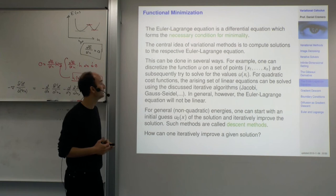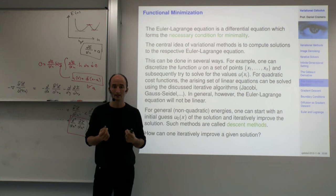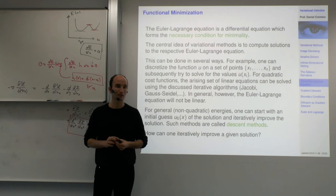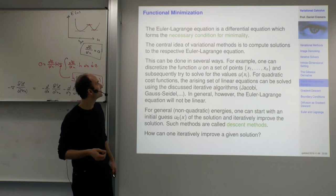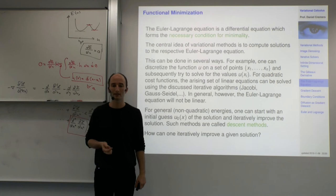In general, it's somewhat tricky to solve the Euler-Lagrange equation. It forms the necessary condition for minimality, but not sufficient in general. When is it sufficient? If we have a convex energy — which in this case we do — then it's also a sufficient condition, meaning all we have to do is solve the equation. The central idea of variational methods is to set up the Euler-Lagrange equation and solve it.